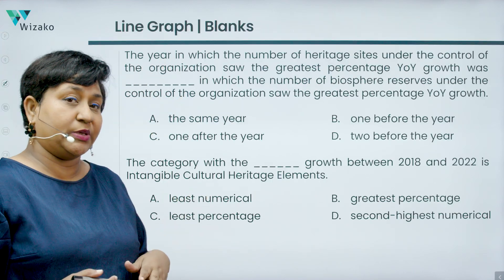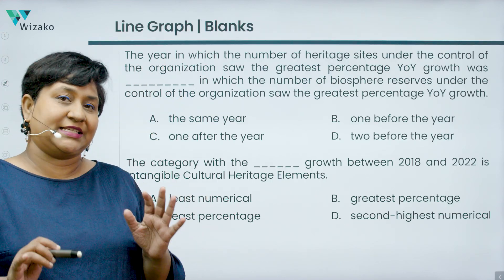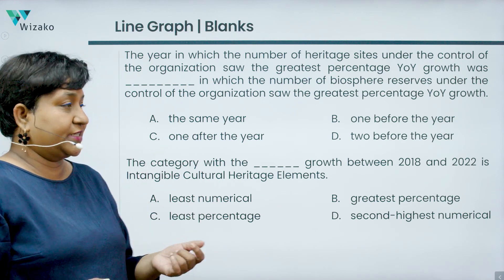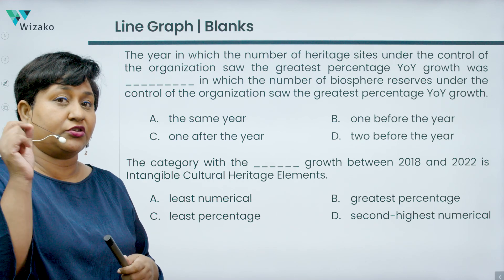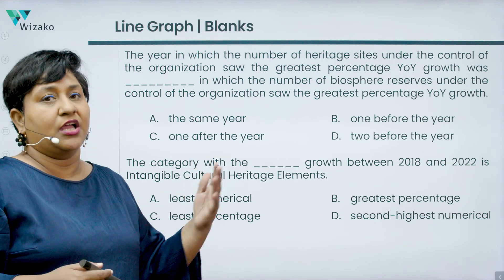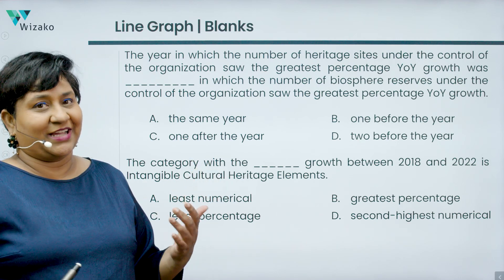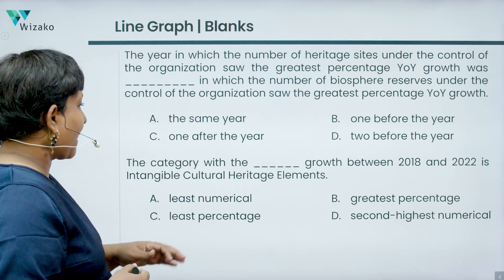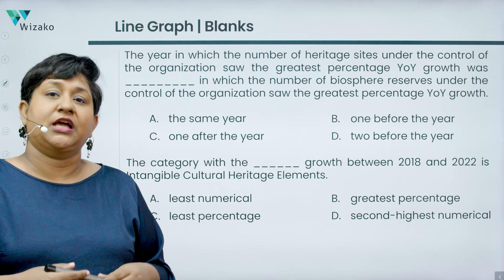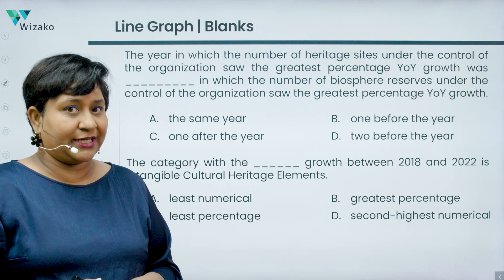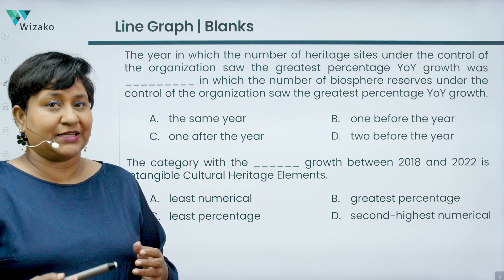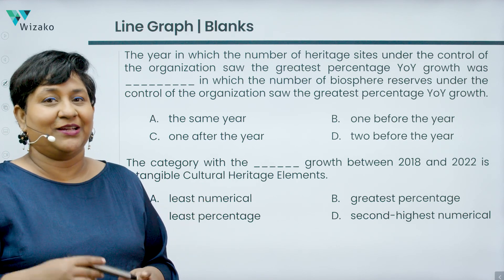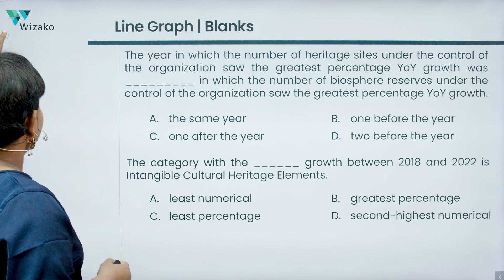We have two questions that can be answered independently because they are two different sentences. Graph questions are always fill-in-the-blank questions. In the test there will be a drop-down box, but here the options are laid out separately. You have four options for both questions — you can have anywhere from three to five answer options per blank.